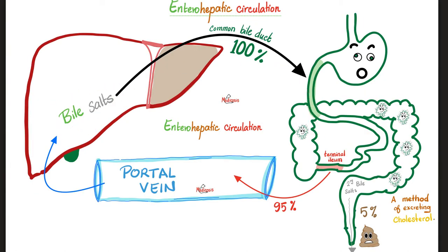Bile acids and bile salts are so valuable you don't want to waste them in your poop. That's why 95% is their recycling rate — 95% goes back from the intestine to the liver: the enterohepatic circulation. The remaining 5% you poop out, which can actually be a good thing if you have excess cholesterol. You can increase that by eating more fiber or by taking a bile acid sequestrant medication — the bile acid resin cholestyramine.